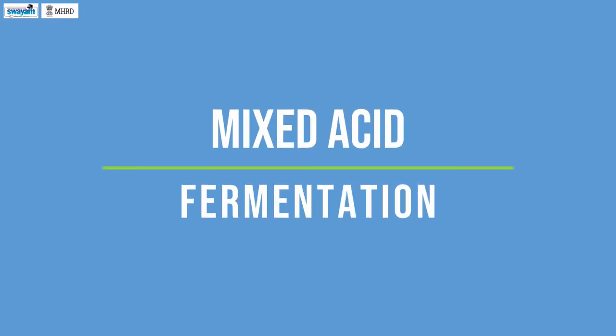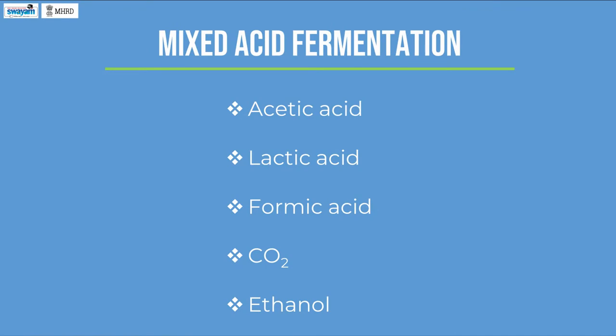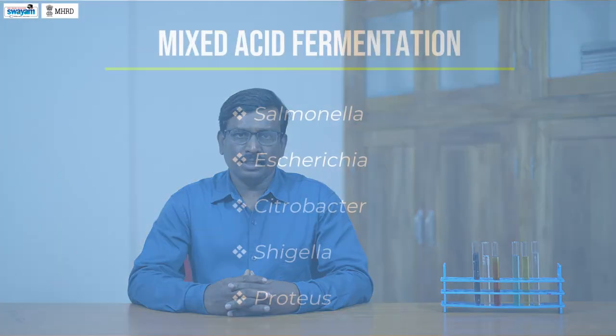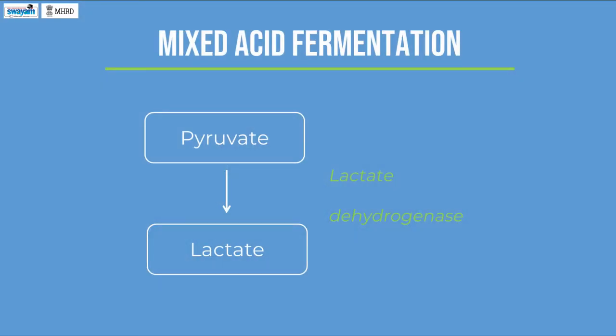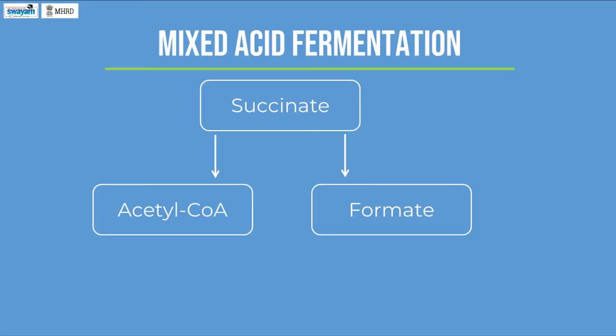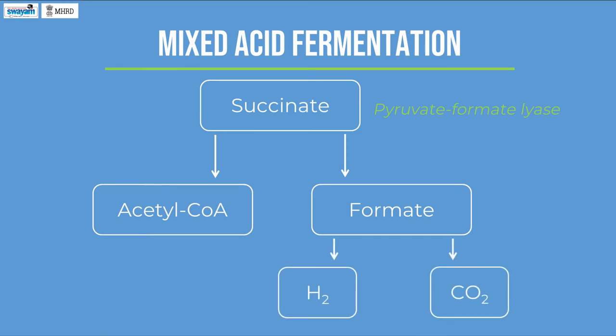Mixed Acid Fermentation involves the production of a mixture of acids including acetic, lactic, and formic acid, along with carbon dioxide and some ethanol. This is carried out by certain facultative anaerobic enterobacteria including Salmonella, Shigella, Citrobacter, Escherichia, and Proteus. Fermentation involves the following steps: pyruvate formed from glycolysis is converted to lactate by lactate dehydrogenase; lactate is decarboxylated to oxaloacetate and then reduced to succinate; succinate is cleaved to acetyl-CoA and formate by pyruvate formate lyase; formate is cleaved to hydrogen and carbon dioxide by formate hydrogen lyase, a complex of formate dehydrogenase and hydrogenase enzymes.